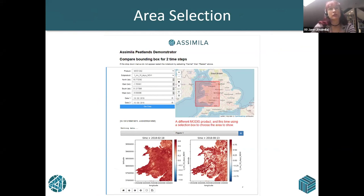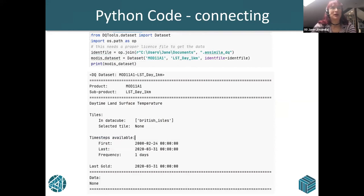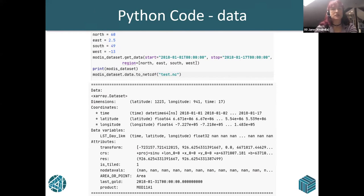We've also got a QGIS plugin — this is getting CHIRPS RFE data over Ghana. You choose what you want and plot it up. And for the really technical people, you can do it in Python. You import a thing called a dataset, give it a licence file, say you'd like MODIS 11 land surface temperature, and it returns all the information and metadata — for example, a British Isles tile from 2000 to 2020. Then you just specify north, south, east, west, start, stop, call get data, and out it all pops.